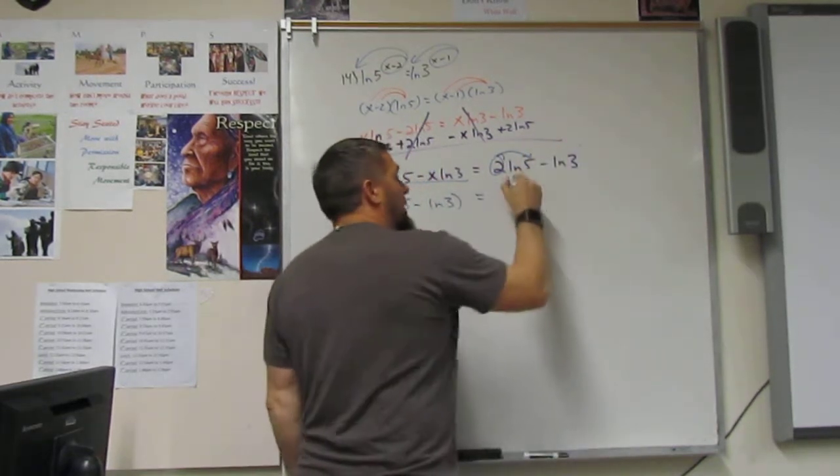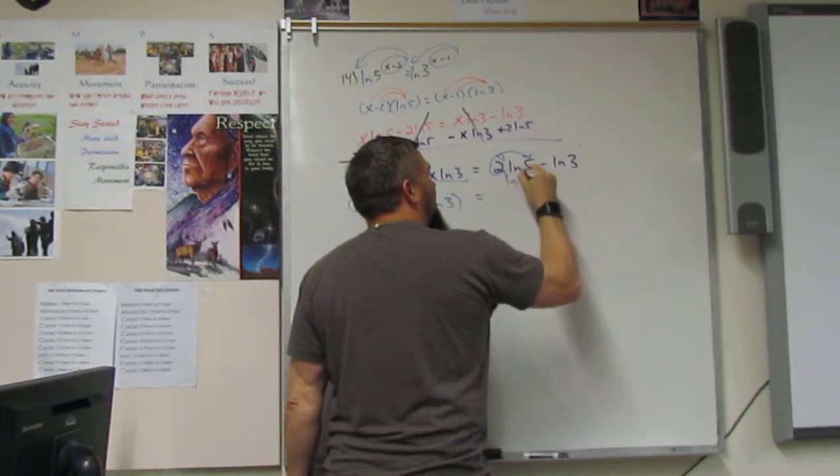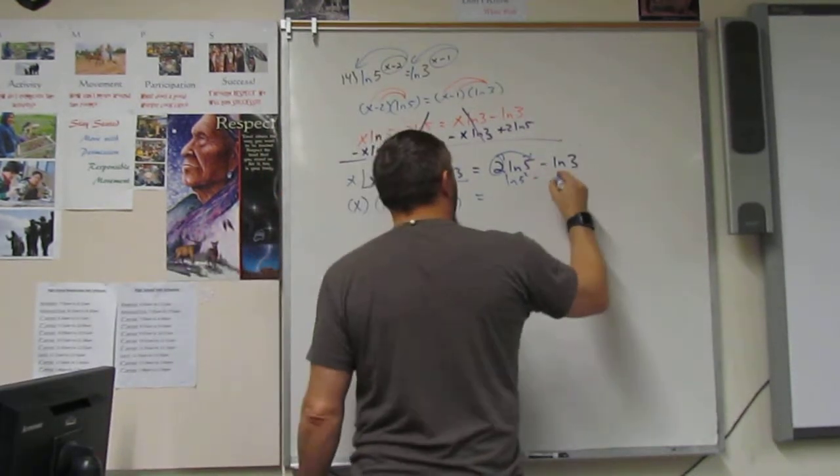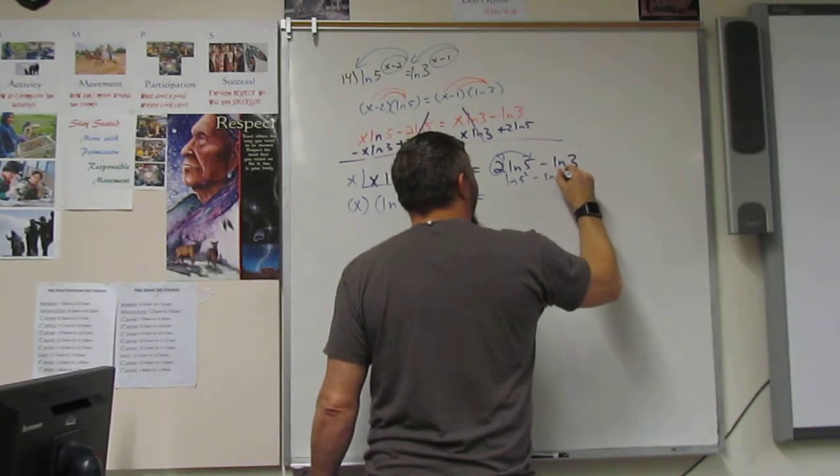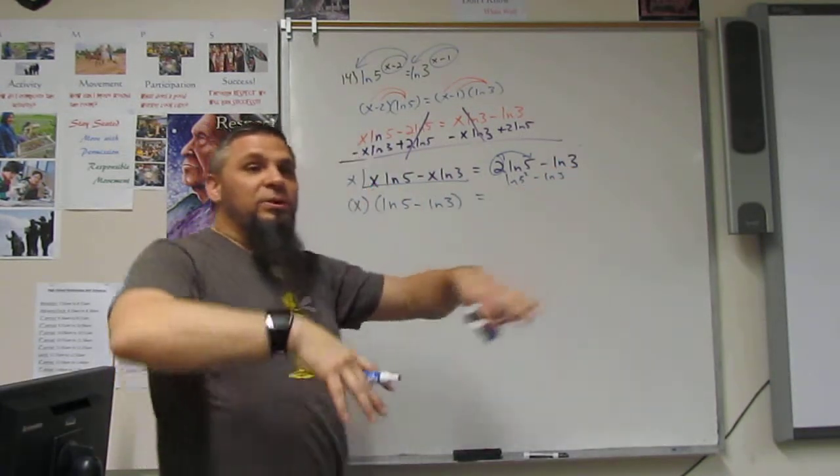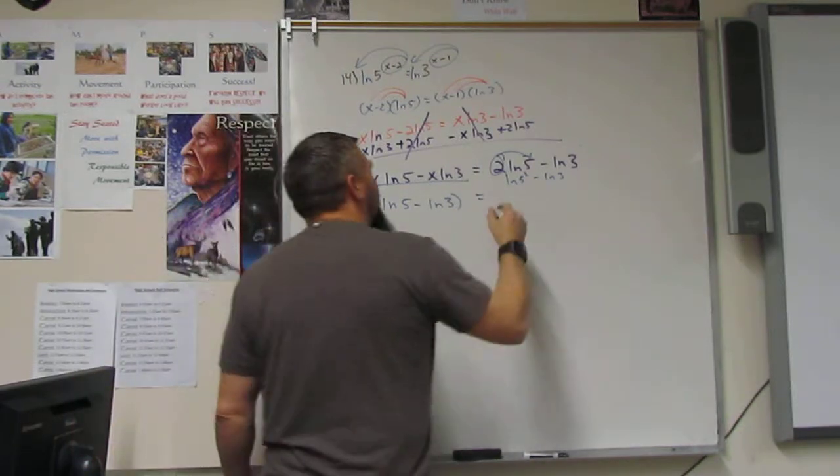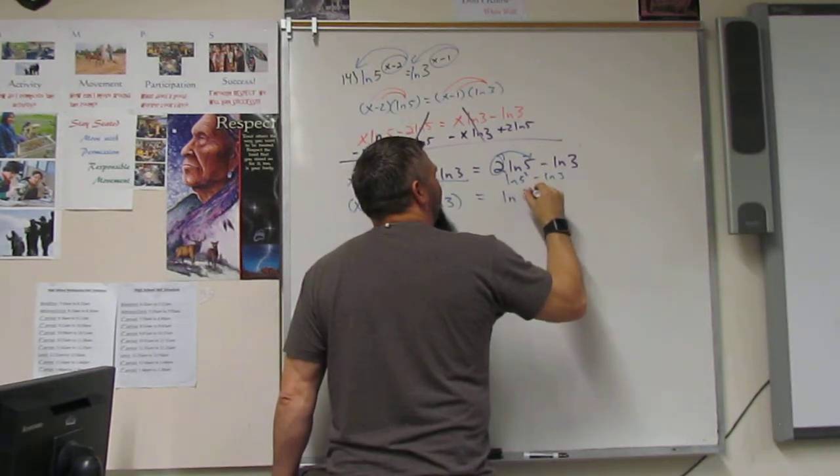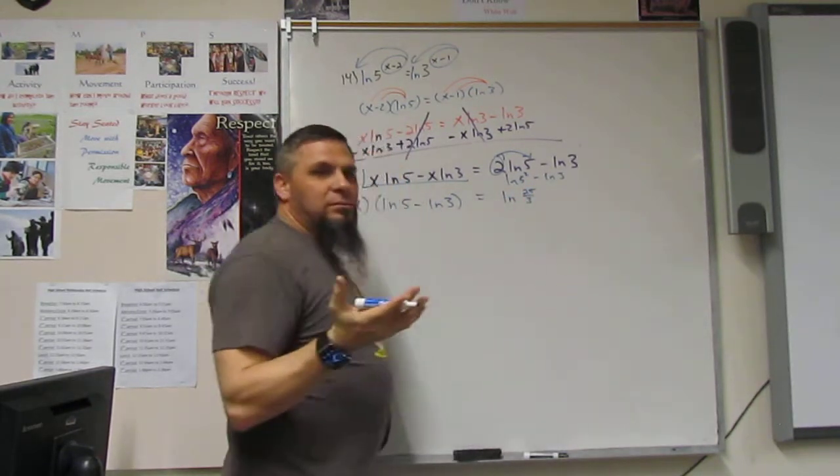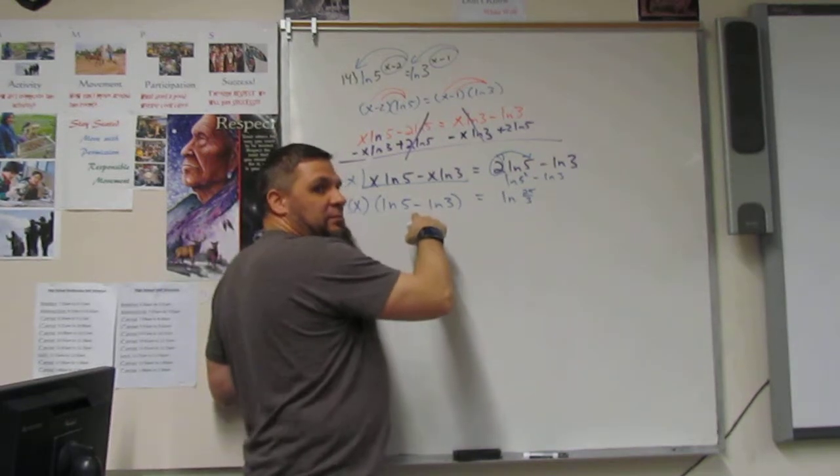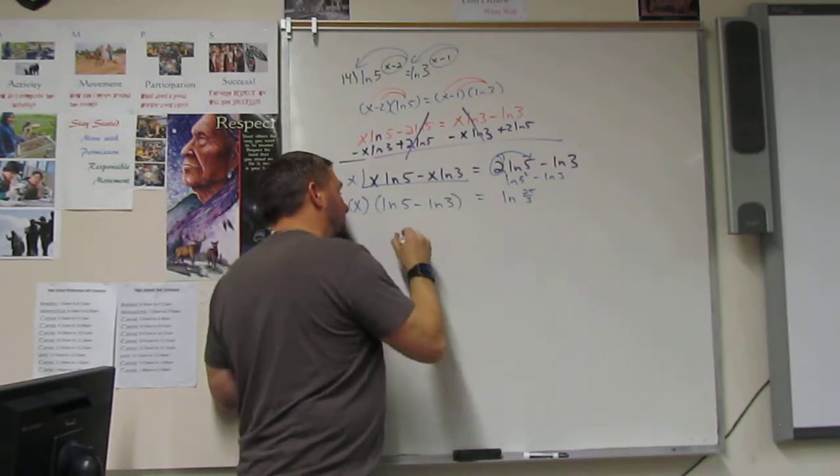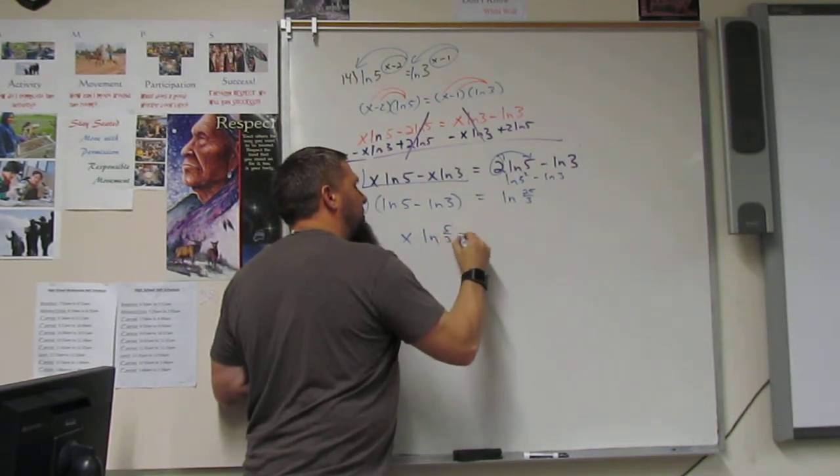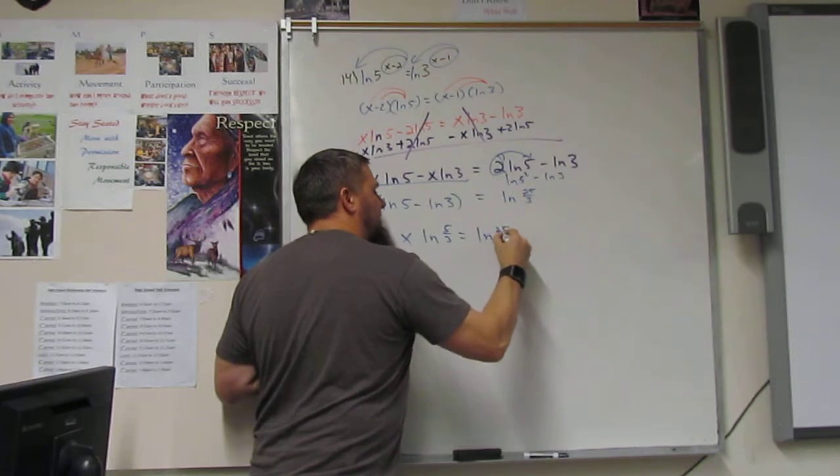Now, isn't that just ln of 5 squared? What is 5 squared? 25, good. And then, 25, and then so when we minus, we do what? Wait, what? What do we do? I'm sorry. It's all right. It's all good. Alright, so it's 25 divided by 3. That's all. And this one, this should be x times ln of 5 divided by 3 is equal to ln 25 divided by 3.